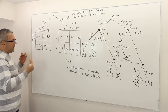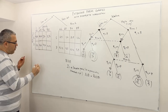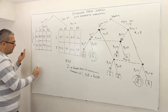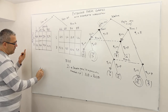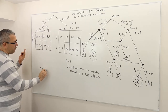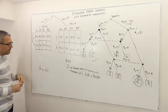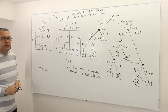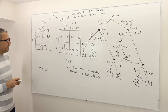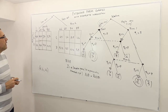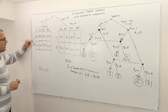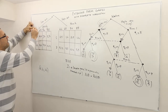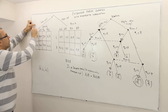Let's pick one randomly — for example, the strategy profile (4,4), (4,4). Is this a Bayesian Nash equilibrium? Let's see. That means player two is playing (4,4).